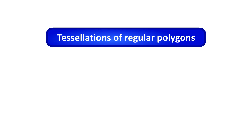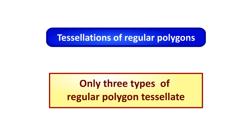Tessellations of regular polygons. Only three types of regular polygon tessellate.